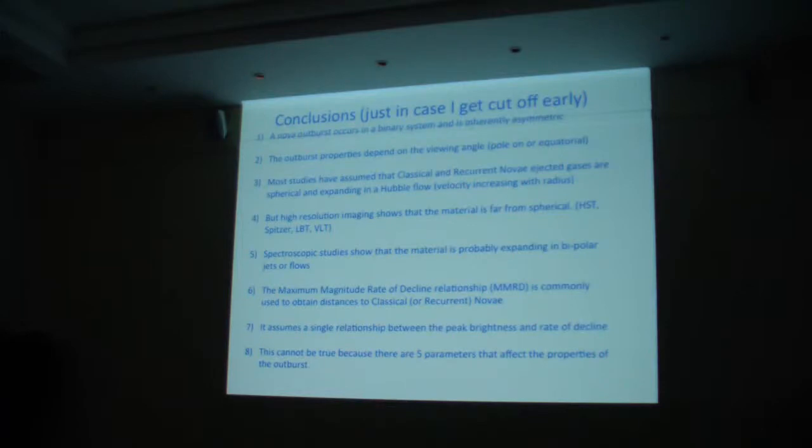No outburst occurs in the binary system and is inherently asymmetric. The outburst properties depend on the viewing angle, as I would want to show you with the help from Chesneau. Most studies are assuming that the classical nova ejected gases are spherical and expanding in a Hubble flow. That can't be true based on observations with all the spacecraft and AO.